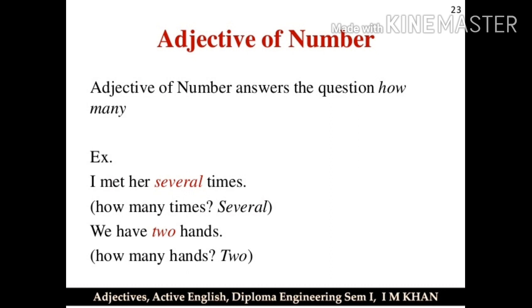Adjective of number answers the question 'How many?' For example, 'I met her several times.' If we ask 'How many times?', the answer will be several. Example number 2: 'We have two hands.' If we ask 'How many hands?', then the answer will be two.